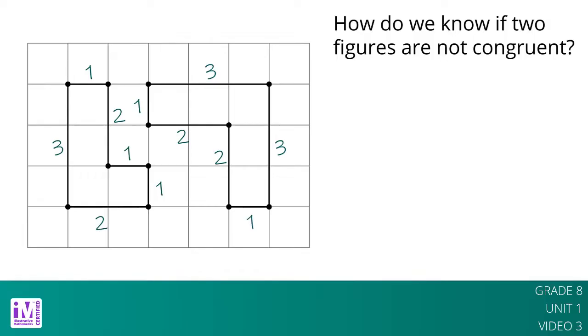There is no way to make a correspondence between them where all corresponding sides have the same length. Comparing the side lengths helps us recognize that there is no way to define a sequence of rigid transformations that line up these two figures exactly.